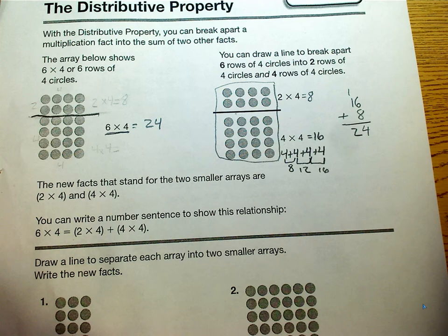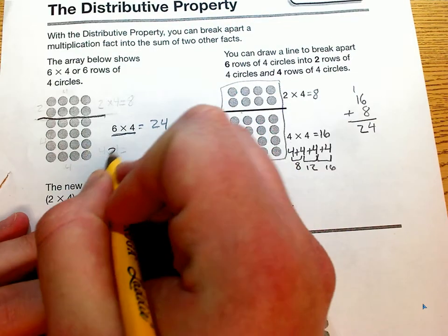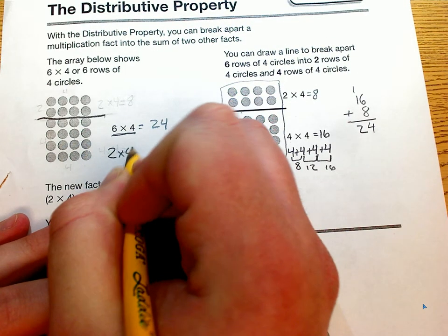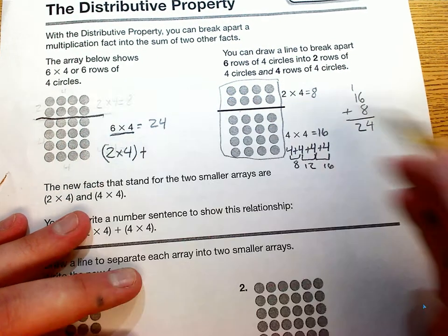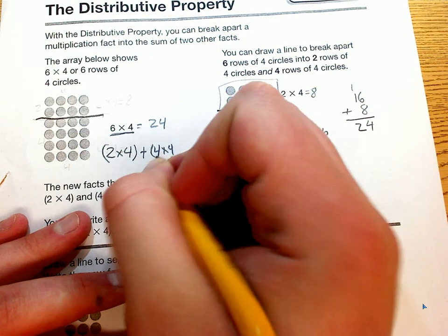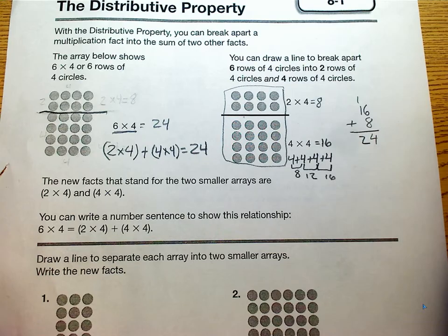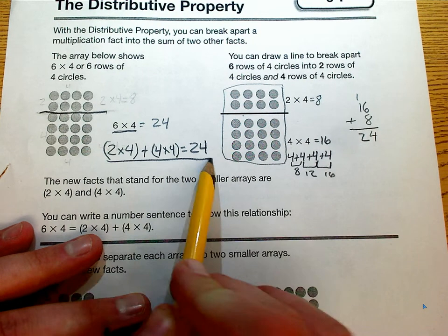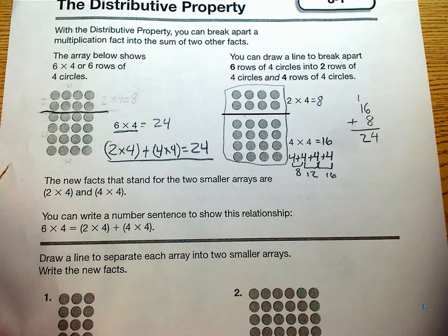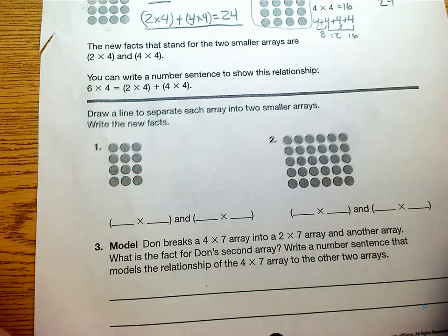Now we can write that in the fancy way — I'm not really going to look for this with the third graders — but if some people get it, we can write it this way: 2 times 4 plus 4 times 4 equals 24. And that's one way to write that, but I don't think we're really going to expect that from them on the test or even on worksheets.